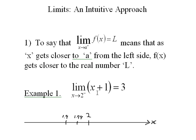The limit of the function x plus 1 as x approaches 2 from the left side equals 3. From the left side means x is getting closer and closer to 2. We put in numbers on the left side like 1.9 and get 2.9. Then putting in 1.99, which is closer to 2 from the left side, we get 2.99. As x gets closer and closer to 2 from the left, the function gets closer and closer to 3.